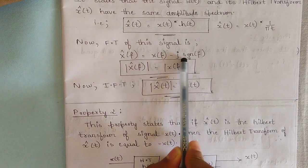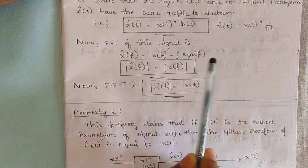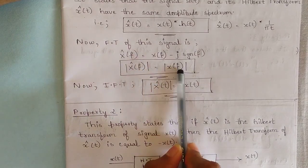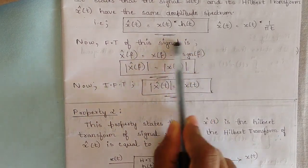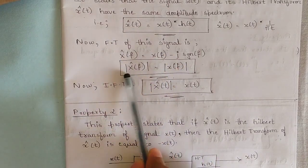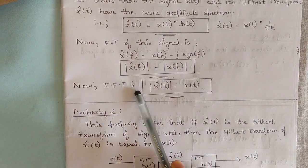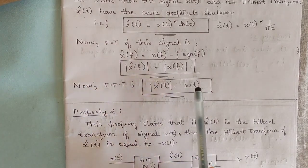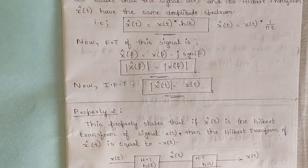The Fourier transform gives x̂(f) = X(f) · (−j · sgn(f)), where sgn stands for the signum function. If we consider only the magnitude, the phase part cancels out, so x̂(f) has the same amplitude spectrum as X(f). Taking the inverse Fourier transform gives x̂(t) = x(t), confirming property one.